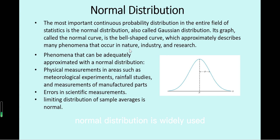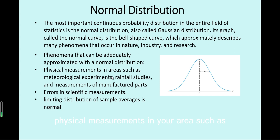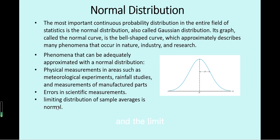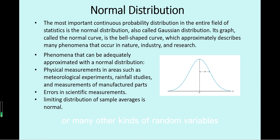Normal distribution is widely used because it can describe many phenomena in nature, industry, and research. For example, physical measurements such as meteorological experiments, rainfall studies, and many other phenomena. The limiting distribution of many other distributions — the average, or sample mean — can be modeled as a normal distribution.